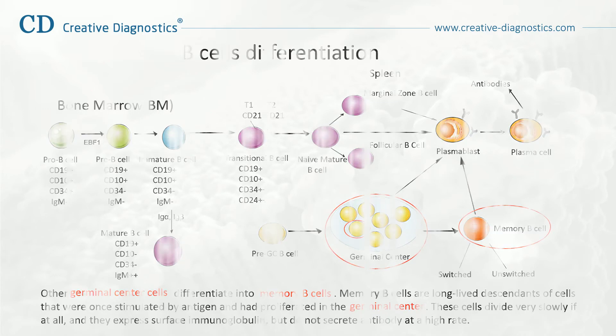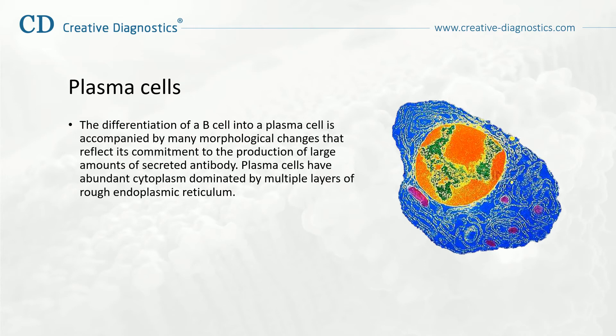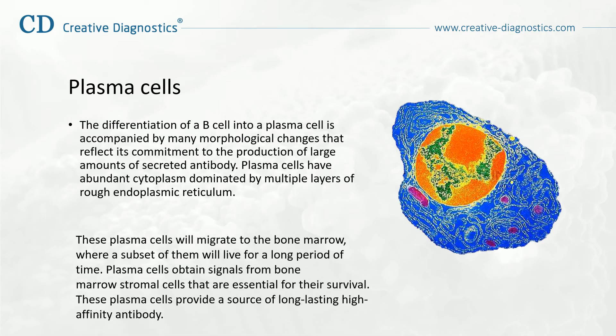The differentiation of a B-cell into a plasma cell is accompanied by many morphological changes that reflect its commitment to the production of large amounts of secreted antibody. Plasma cells have abundant cytoplasm dominated by multiple layers of rough endoplasmic reticulum. These plasma cells will migrate to the bone marrow, where a subset will live for a long period of time. Plasma cells obtain signals from bone marrow stromal cells that are essential for their survival, providing a source of long-lasting, high-affinity antibody.